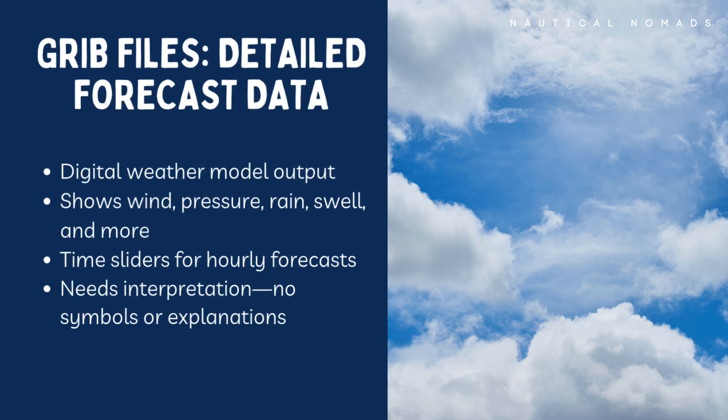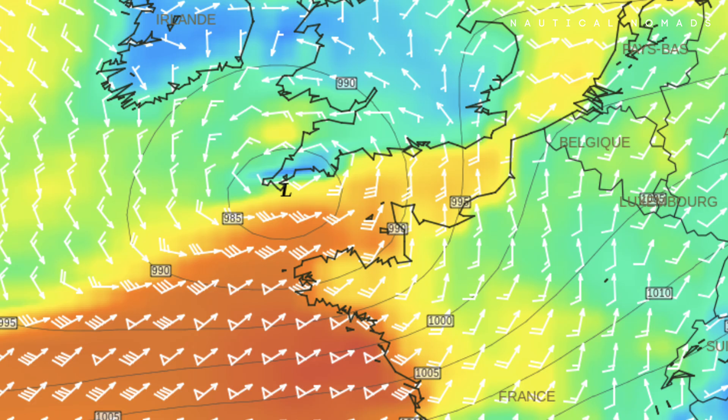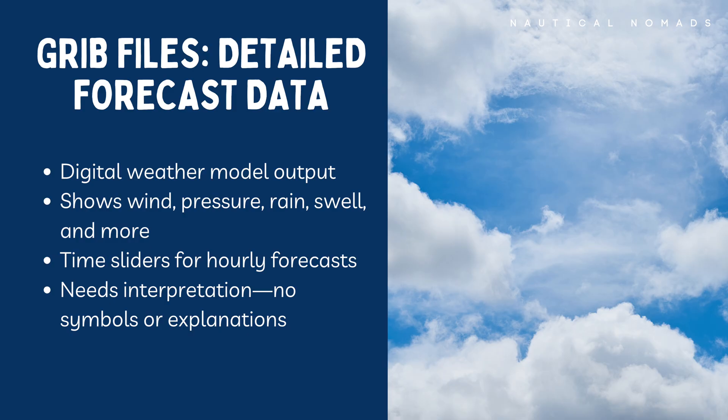If synoptic charts show the big picture, GRIB files give you the zoomed-in view. These are raw data files generated by weather models that provide a visual forecast over time. You can see animated wind arrows, rain bands, pressure gradients, swell forecasts, and more — hour by hour, location by location. The strength of GRIB files is detail. The downside: they don't come with explanations. No fronts, no weather symbols. You need to interpret what you're seeing.